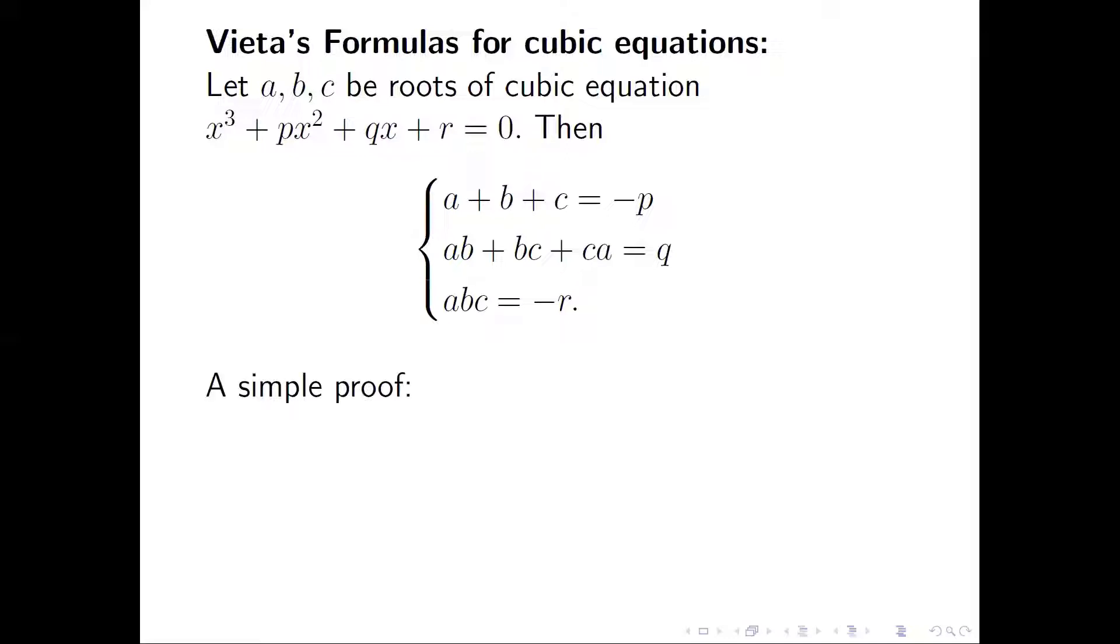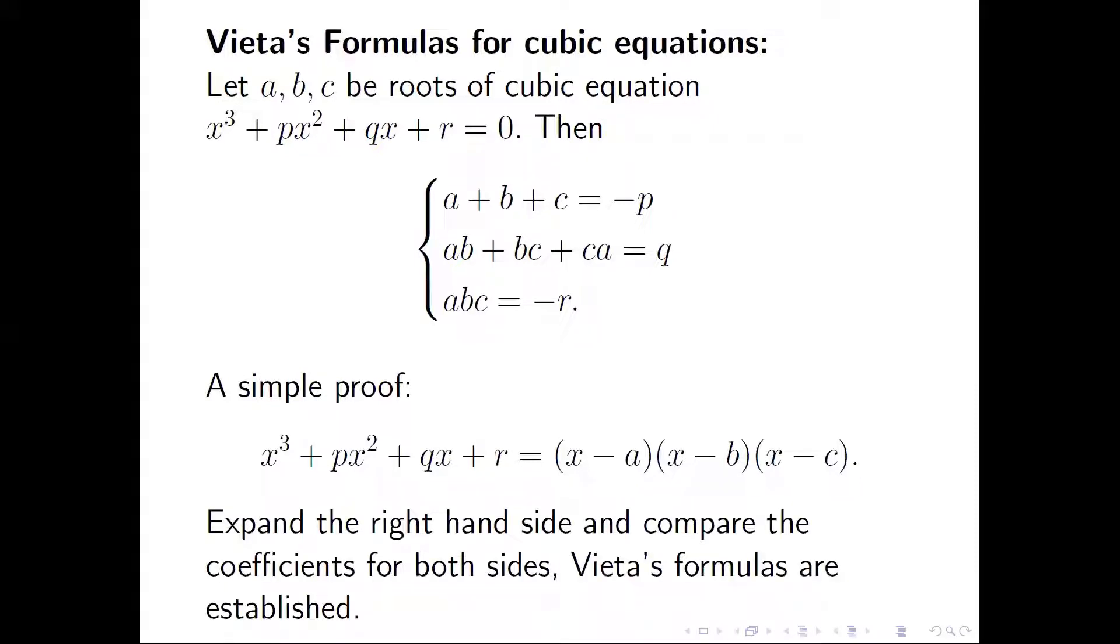A simple proof: by the zero-root theorem, the polynomial can be rewritten as (x - A) times (x - B) times (x - C). If we expand the right-hand side, combine like terms, and compare the coefficients for both sides, these formulas are then established.